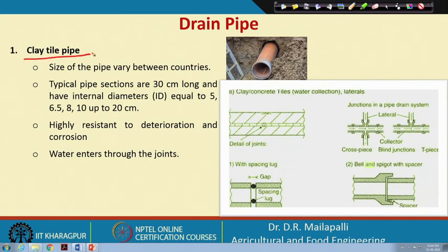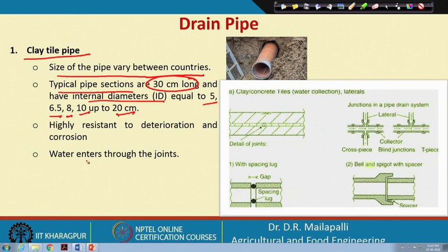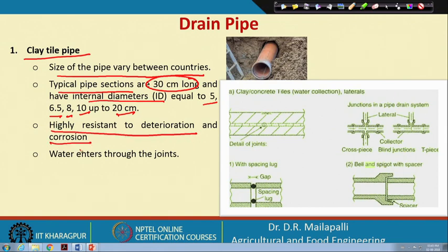Clay tiles are made of clay soil. The size of the pipe varies between countries. Typical pipe sizes are about 30 centimeters long — roughly 1 foot — with internal diameters of 5, 6.5, 8, 10, or 20 centimeters. These small clay pipe pieces are highly resistant to deterioration and corrosion because they are made of clay.